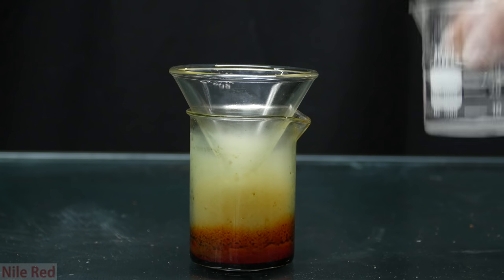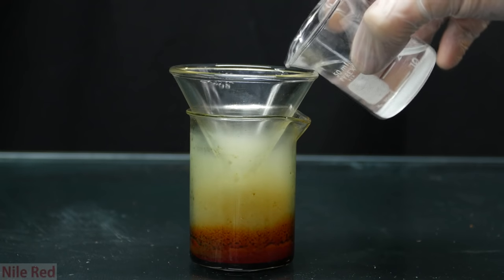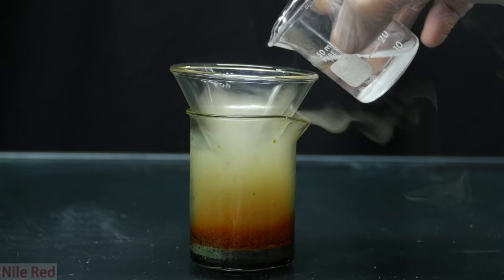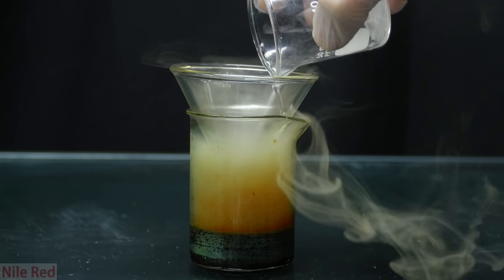To neutralize the hexavalent chromium, just like before, we add in some sodium sulfite solution. It quickly turns to the green color. I mix it around and add it to the chromium waste.